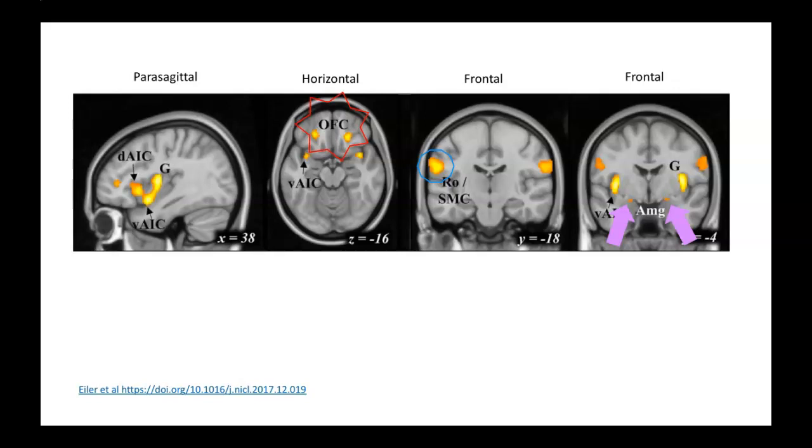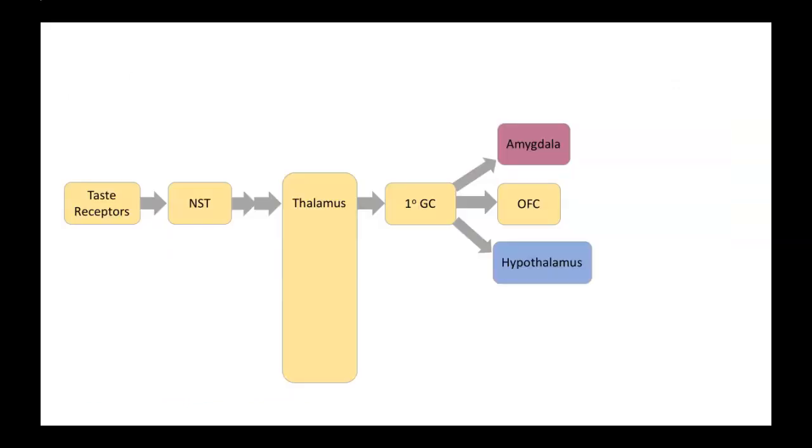Our perception of taste is truly multimodal. What we eat is affected not only by the flavor but also by the texture, by the smells, as well as visual input. Let me show you how some of those other modalities converge onto this pathway. Here we're looking at the pathways for the taste receptors sending information to the gustatory cortex and then the amygdala, the orbital frontal cortex, and the hypothalamus. But remember that there are also somatosensory receptors in our tongue. Those send information to the NST. They project to the thalamus and from there to the primary somatosensory cortex. Output from there feeds into the primary gustatory cortex as well as the orbital frontal cortex. That's where we get the multimodality from.